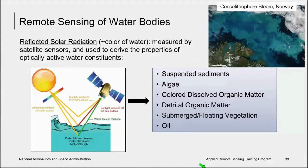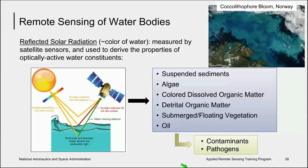The remote sensing of water bodies is used to derive the properties of optically active water constituents. These include suspended sediments, algae, like this coccolithophore bloom in Norway, colored dissolved organic matter, floating vegetation, oil, and other materials. It is important to note that in aquatic remote sensing, it is often necessary to collect sea truth data coincident with the satellite overpass to validate the data products derived from the imagery.